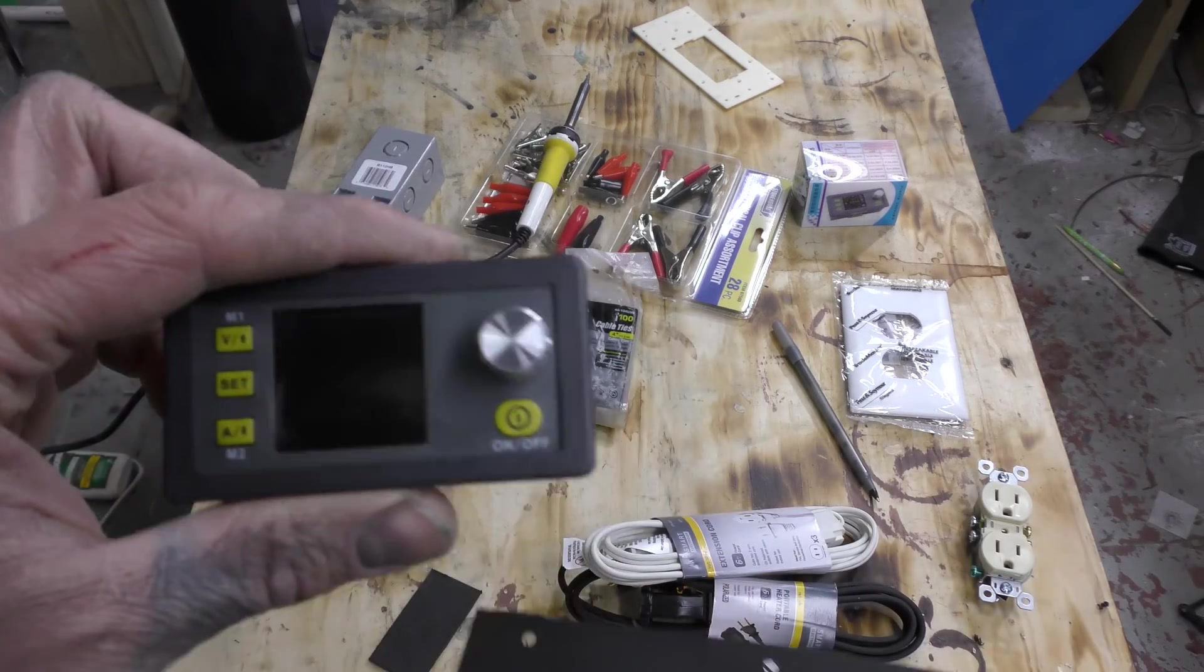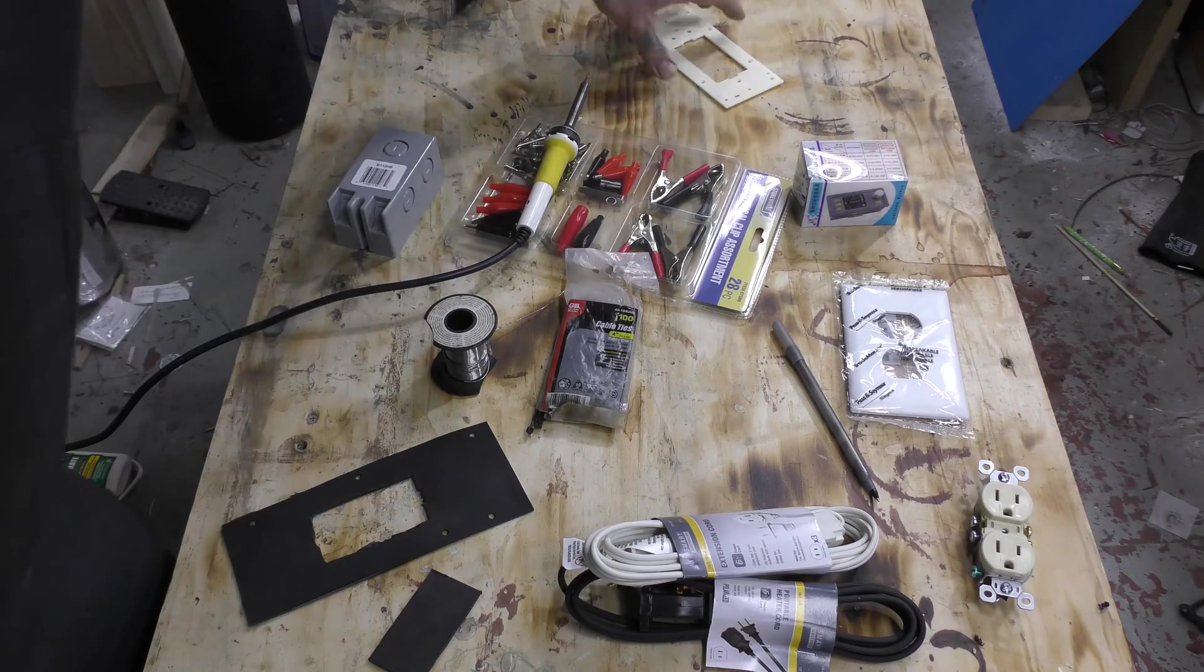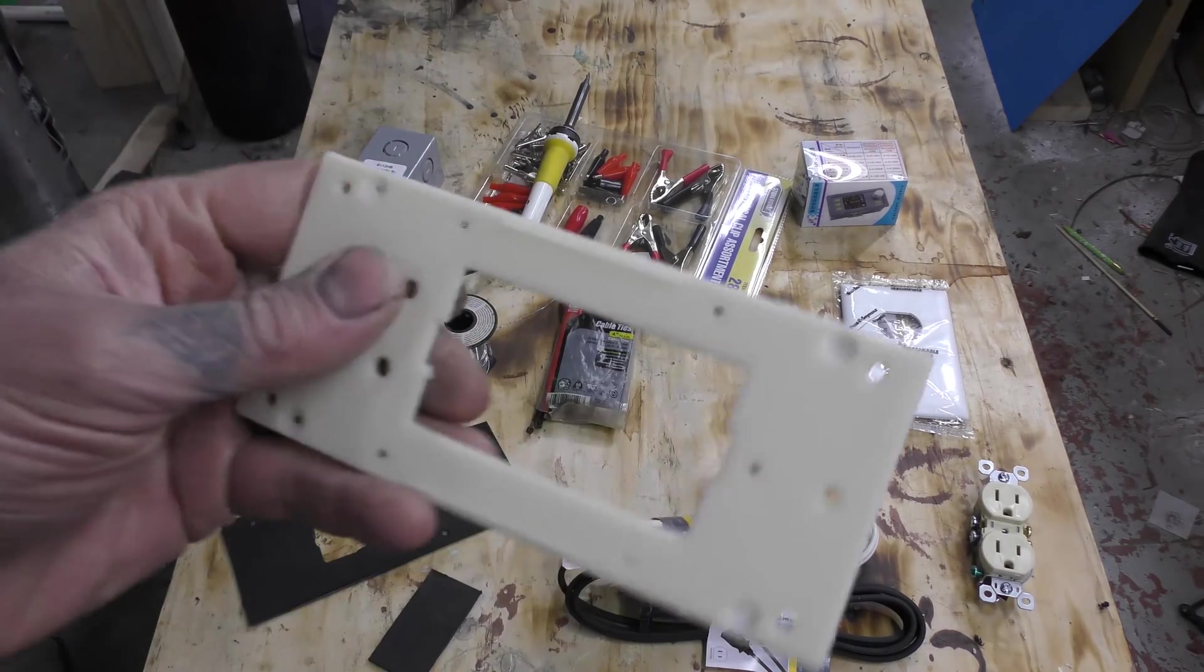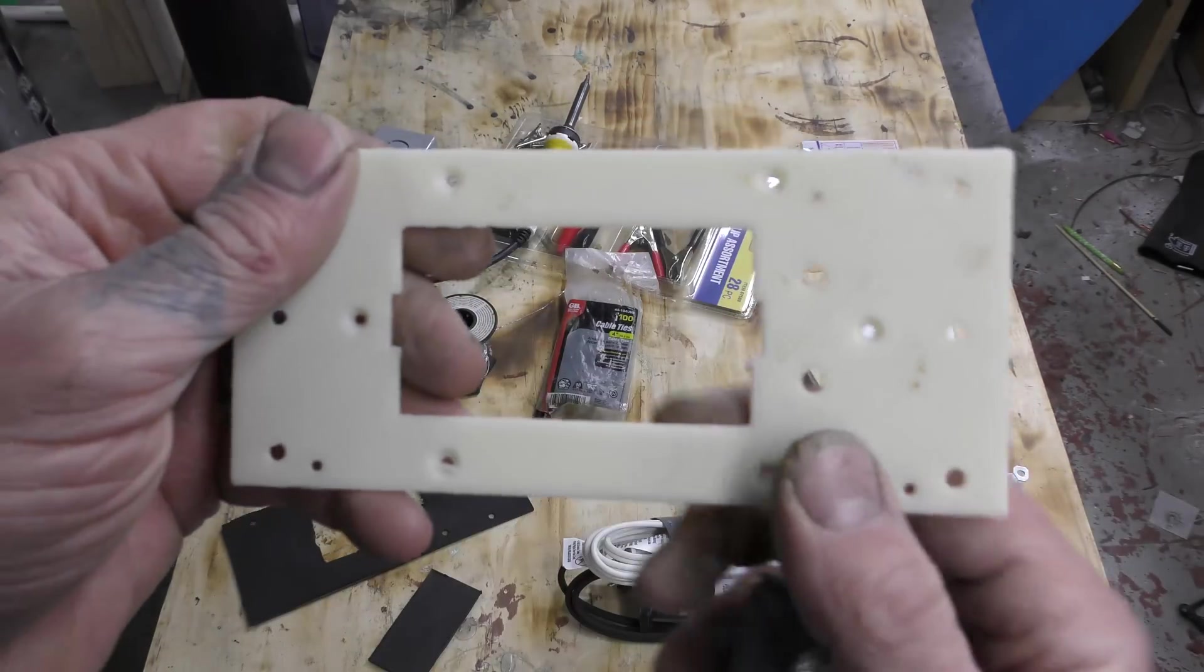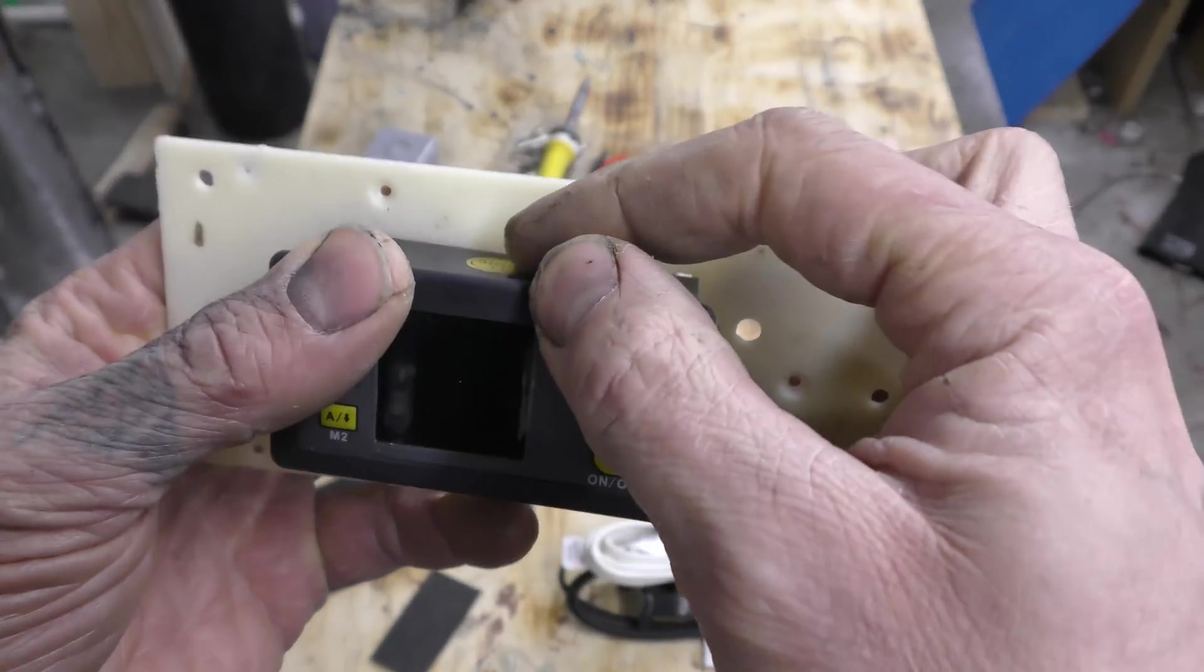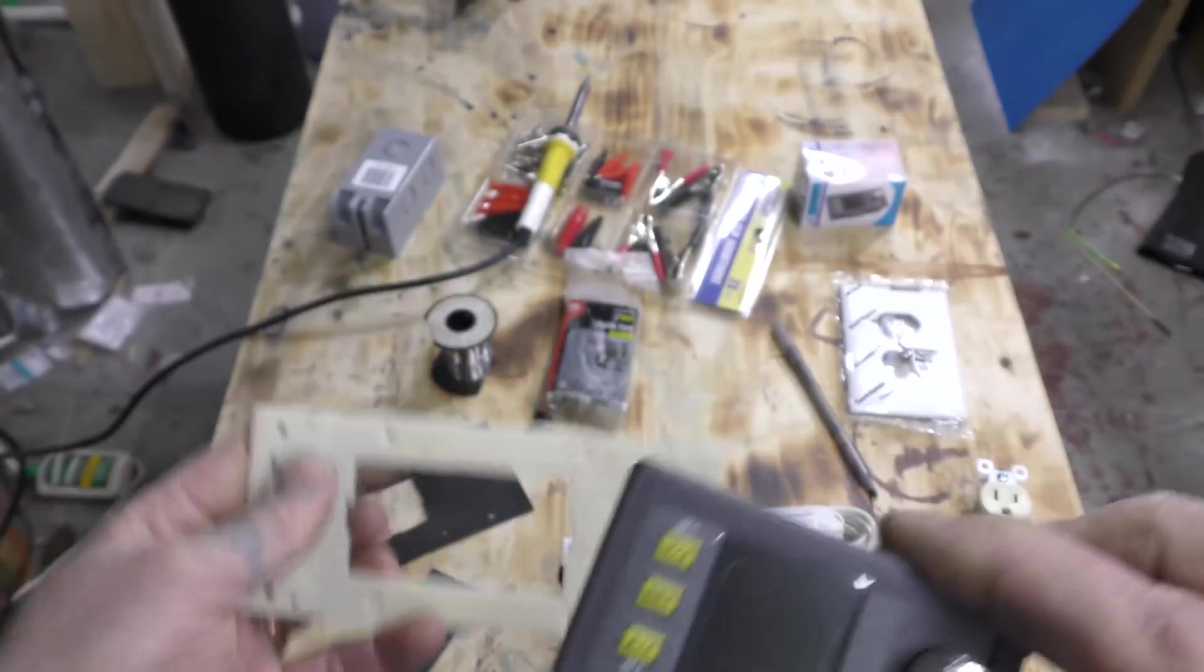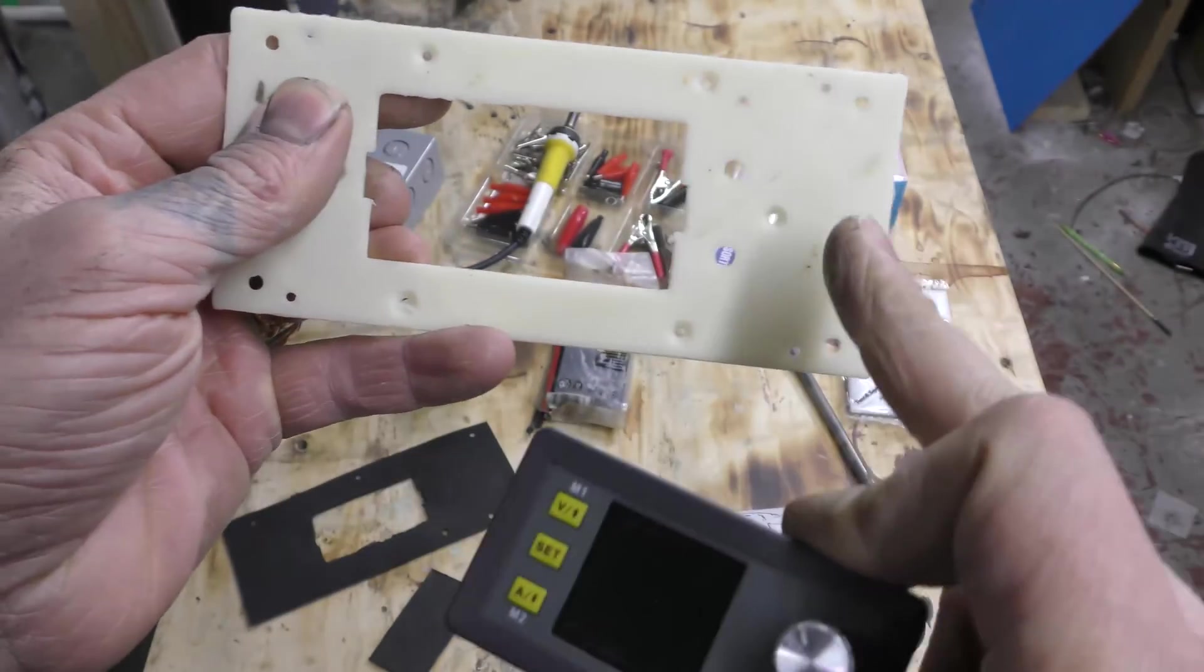Now they do make project boxes for these and if you go to thingiverse.com, you could print off like one of these if you have a 3D printer. And the thing just fits in there just like that and it just pops in. And then you can mount it to whatever because it's got screw holes.